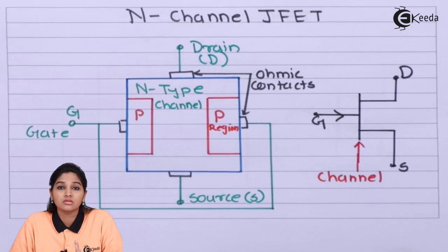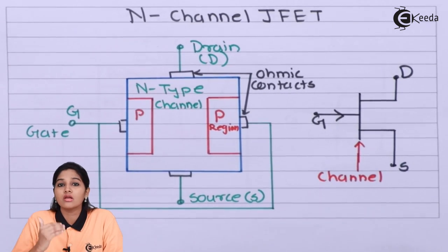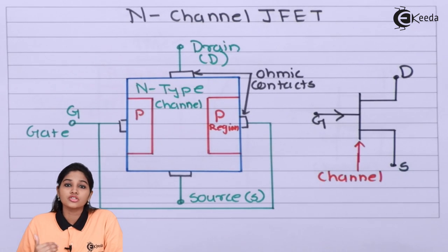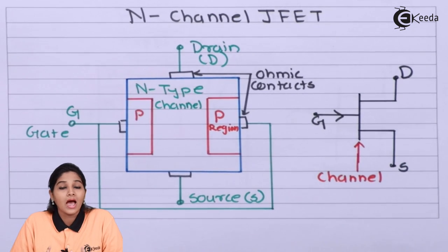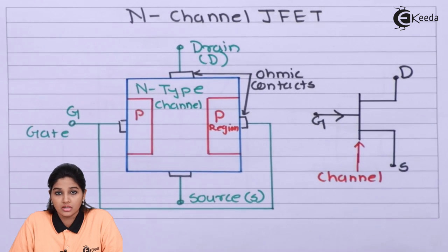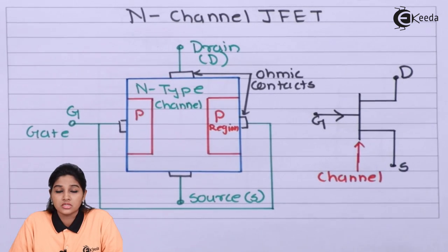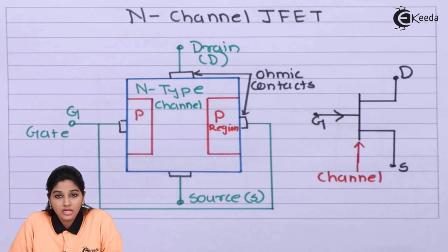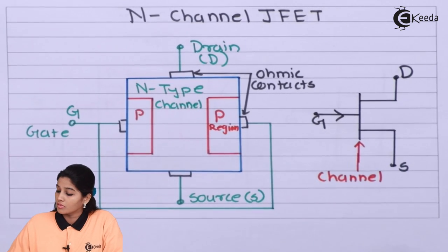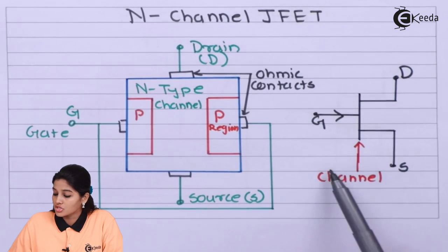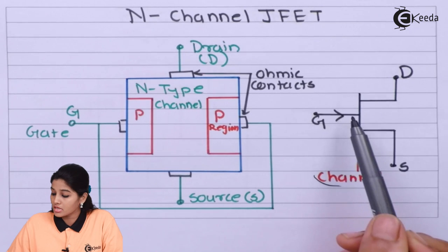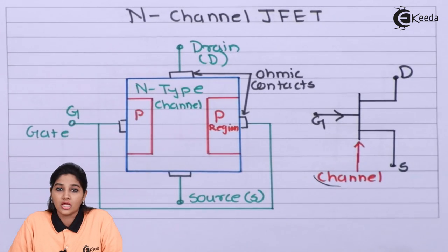The direction of current is always opposite to the flow of electrons. Therefore, the drain terminal is where electrons leave the FET and the source terminal is where electrons enter. As an N-type semiconducting bar is used, current flows only due to the majority carrier — electrons — making the FET a unipolar device. In the symbol of N-channel JFET, the vertical line represents the channel and the arrowhead on the gate points towards the channel.